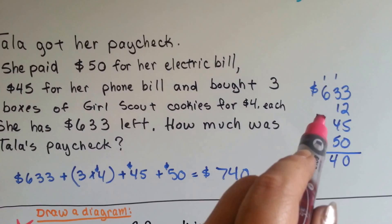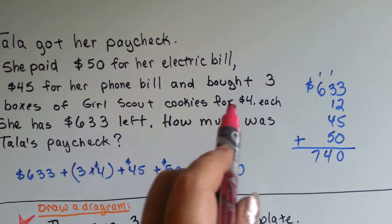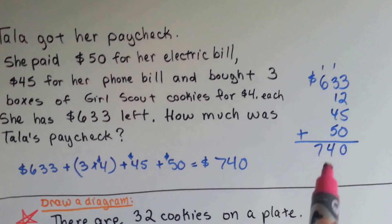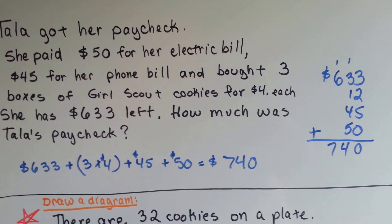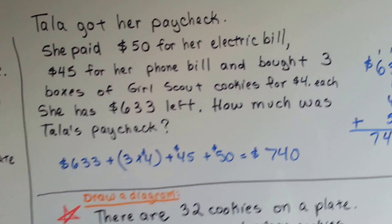Well, all we have to do is total up all the money she spent and add it to what she's got left, right? So we added what she's got left and the money she spent. Three boxes of Girl Scout cookies for $4 each is $12. When we added it all up, it came to $740, and that was her paycheck. See? That wasn't hard, was it?